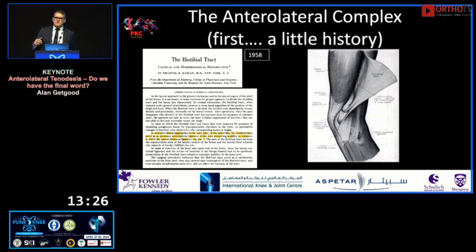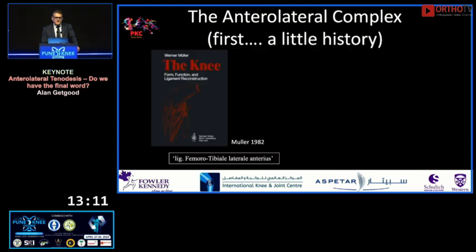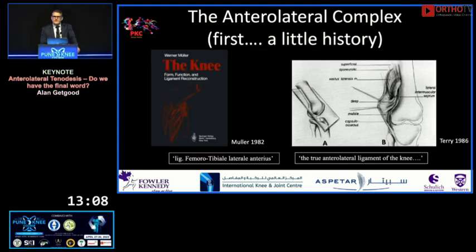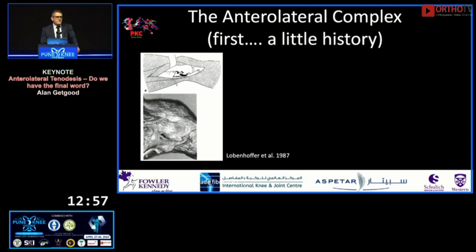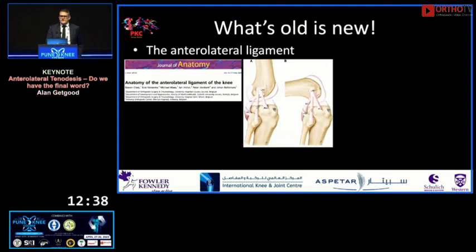Before answering that, it's important to step back historically. The anterolateral ligament is nothing new — it was first described in the 1950s in seminal work by Kaplan describing the IT band. Werner Mueller and Glenn Terry also described this anterolateral structure on the lateral side of the knee controlling anterolateral rotatory laxity. Vieira's study nicely described the ACL and the capsuloosseous layer of the deep IT band creating a horseshoe-sling effect around the lateral femoral condyle to control anterolateral rotatory laxity.